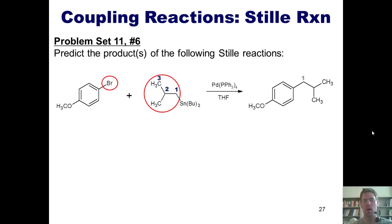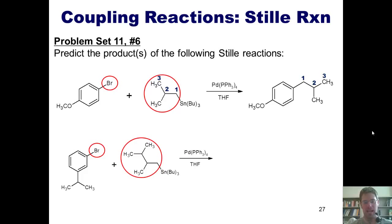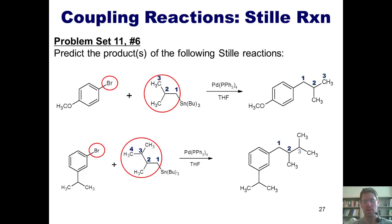This is what a Stille reaction does. In our next example, I ask: what group, aside from the three butyl groups, is attached to my tin? It is this group right here. The next question is: where is my halogen? It is located right here. I'm going to number the carbons in my organostannane 1, 2, 3, and 4. In my final product, the halogen — in this case bromine — ends up getting replaced by this entire group attached to my tin, giving rise to this product with carbons numbered 1, 2, 3, and 4.